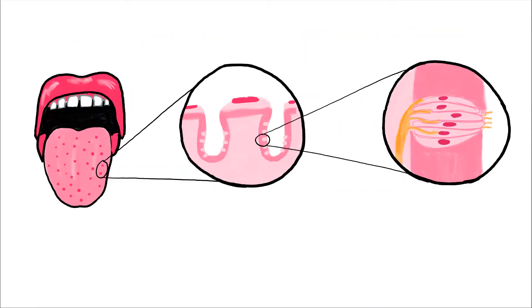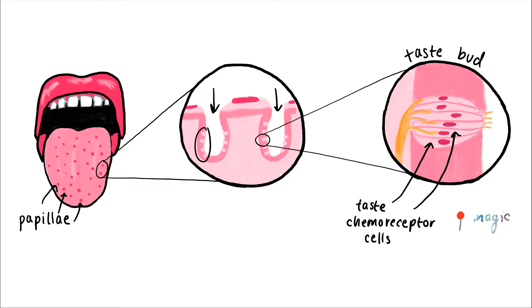Let's start when the sugar enters our mouth. Our tongue is covered in a bunch of tiny little bumps called papillae. There are grooves surrounding the papillae that contain taste buds, and each taste bud contains taste chemoreceptor cells. Inside these cells are where the real magic happens.